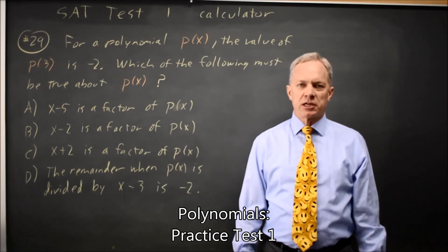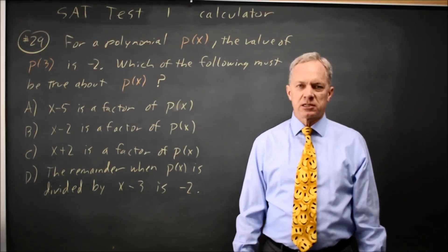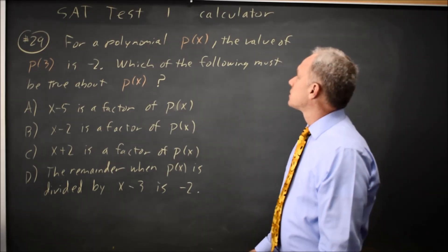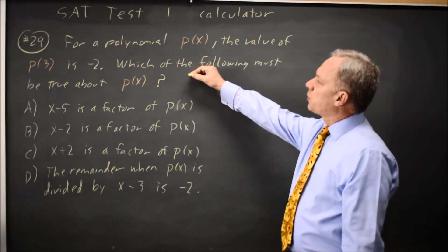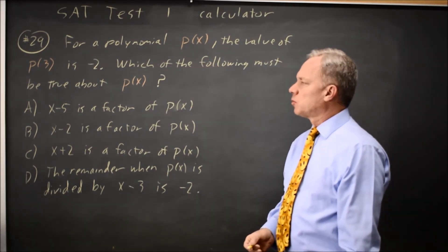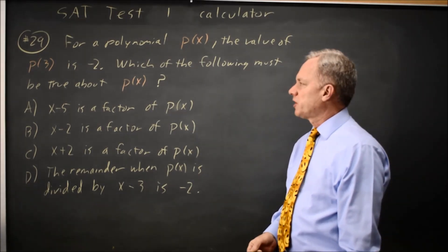This is calculator question number 29 from SAT Practice Test 1. College Board tells us that P(3) is negative 2 and asks which of the following must be true about P(x).